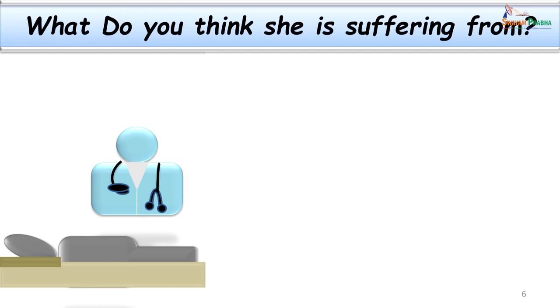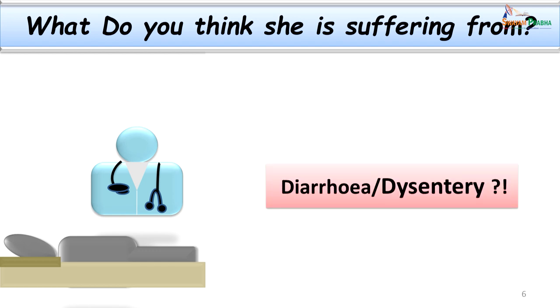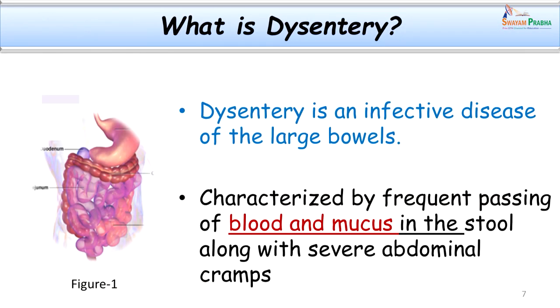What do you think — is it a case of diarrhea or dysentery? It is important to discuss the meaning of diarrhea and dysentery. This case goes more in favor of dysentery, because as per its definition, dysentery is an infective disease of the large bowel characterized by frequent passing of blood and mucus in the stool — more mucus and blood than fecal matter — along with severe abdominal cramps or pain.